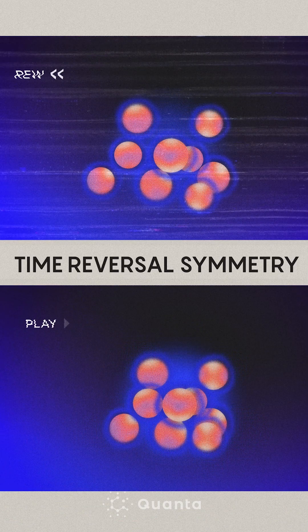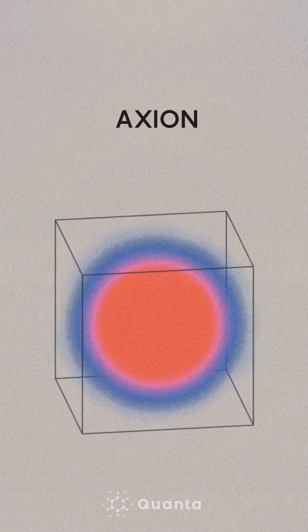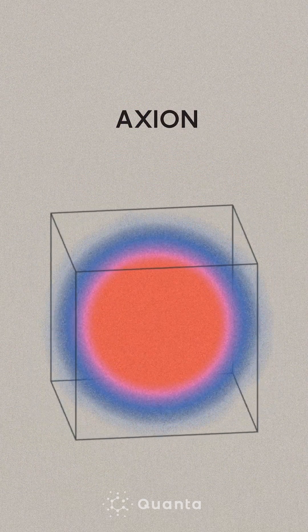It's as if there is a fundamental principle that forces the strong force to respect time reversal symmetry. And the axion was invented to explain this principle.